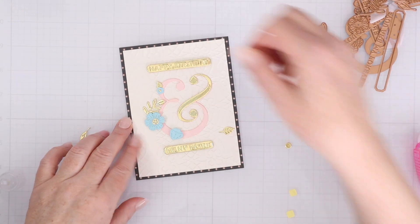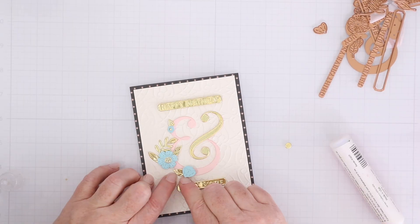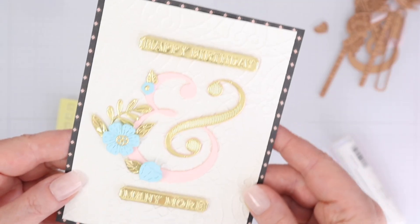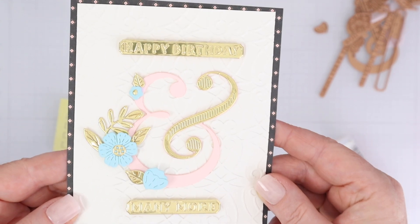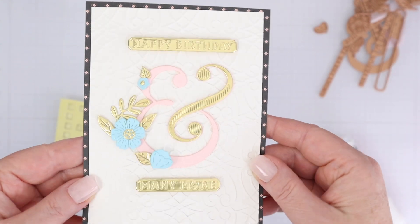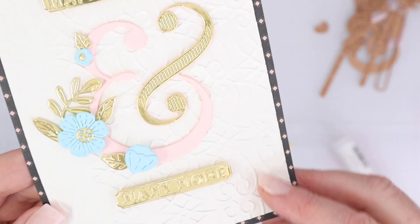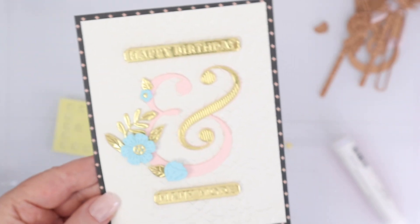So the ampersand die also comes with some flowers and leaves. I cut the flowers out of a light blue cardstock from the card kit and the leaves out of the gold mirror cardstock just because I love gold mirror leaves. And if you look carefully, the cream color cardstock is embossed with that embossing folder.